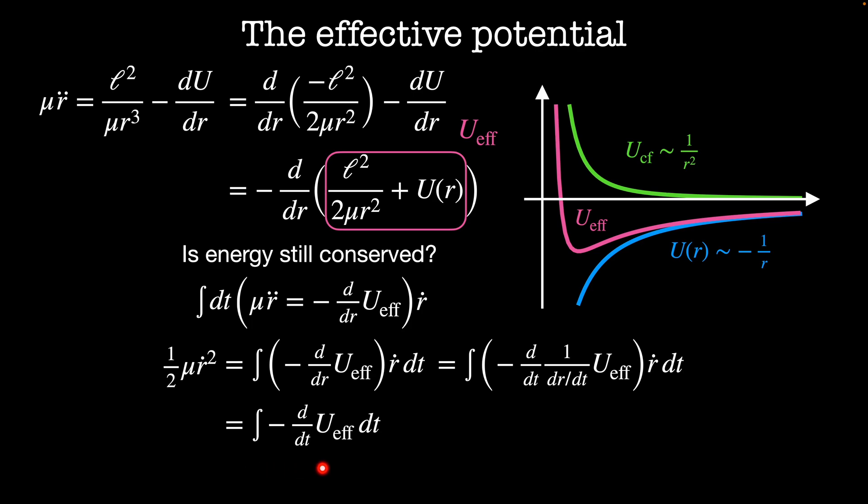Then 1 over dr by dt and r dot cancel out, and what I'm left with is the integral of minus d by dt of U_effective dt. And this integrates to minus U_effective plus some constant of integration C. This tells me that 1/2 μ r dot squared plus U_effective is equal to a constant. So yes, in fact energy is conserved in this system.